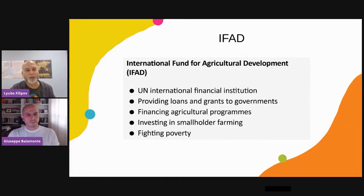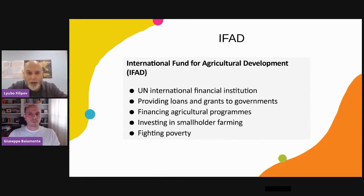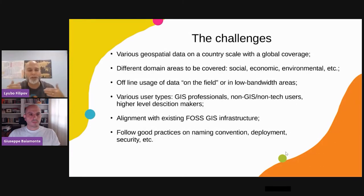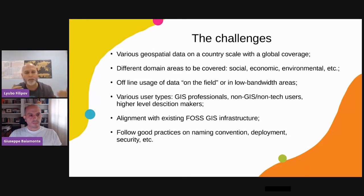IFAD is a specialized UN agency but also a financial institution with a very specific mandate to try to support the poorest of the poor — rural farmers in remote agricultural areas. What we did in IFAD in terms of GIS challenges or requirements, we shaped in the form of this application called GeoScan. First, we receive various requests for different geospatial data in a number of different countries, starting from Solomon Islands, moving to Cambodia, India, Pakistan, shifting all the way to Latin America or the African region. These data requests usually come from different domain areas: social, environmental, economic, and climate-related data.